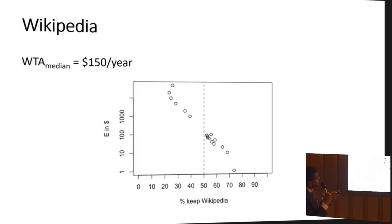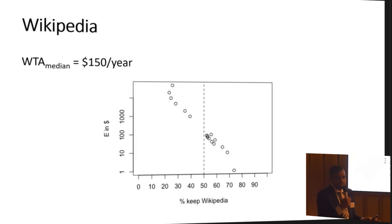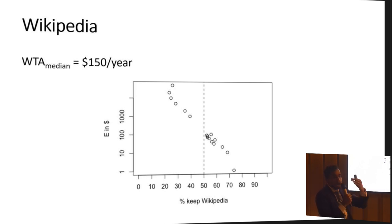We also did more studies for other popular goods. For Wikipedia, the median valuation in the U.S. is around $150 for a year. That translates to around $15 billion of consumer surplus a year — pretty high given that it's a truly free good with no ads, completely built by volunteers, and raises around $30-40 million through donations. But compared to that, it generates over $15 billion of surplus. So there is a lot of welfare which consumers get from using Wikipedia, which wouldn't show up in GDP or productivity.